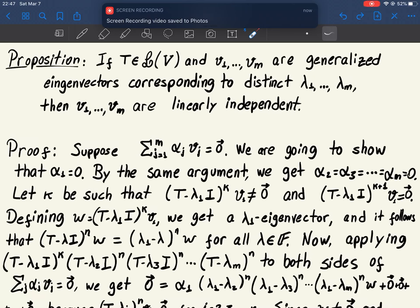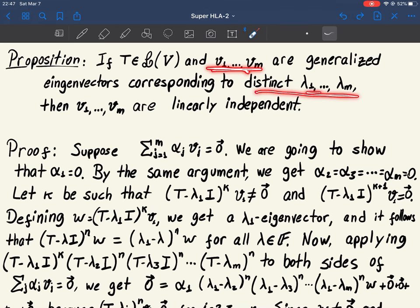So now we give the proof of this important property that generalized eigenvectors corresponding to distinct eigenvalues must be linearly independent. The proof is very subtle and very delicate.